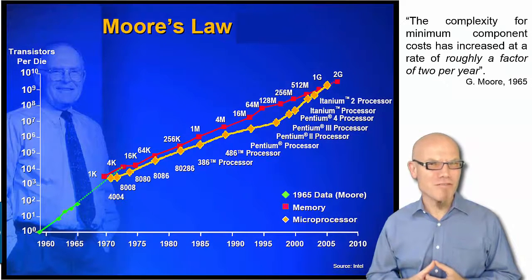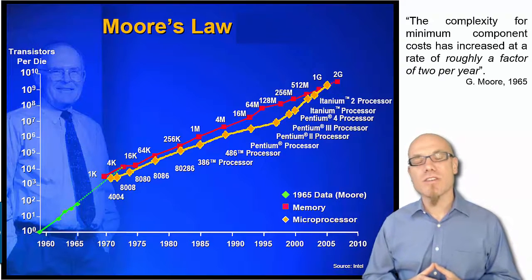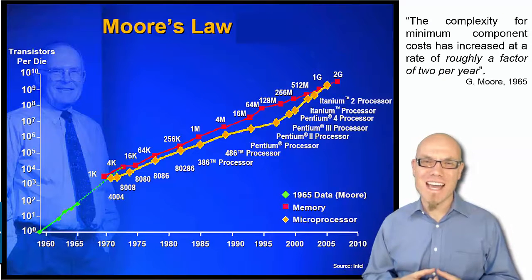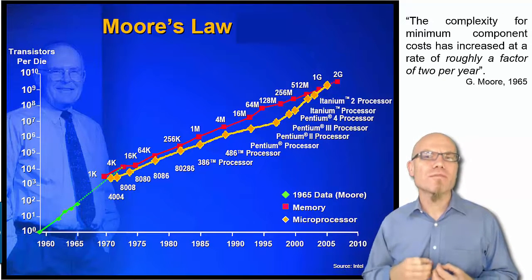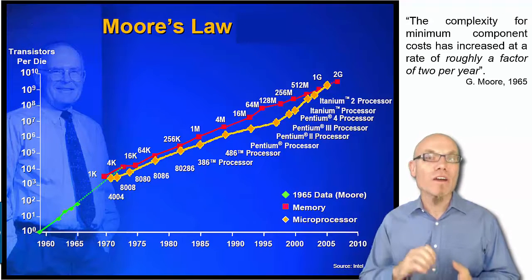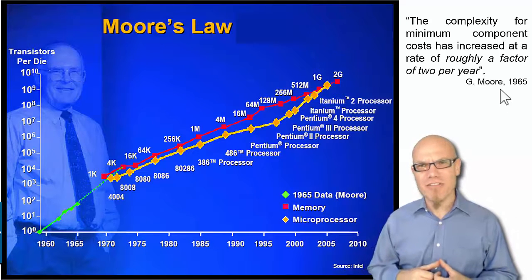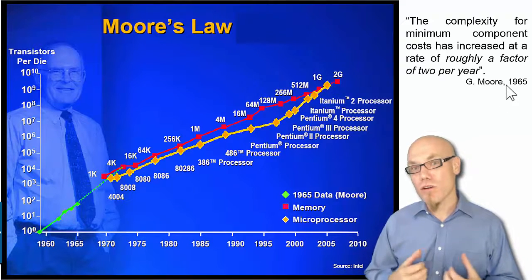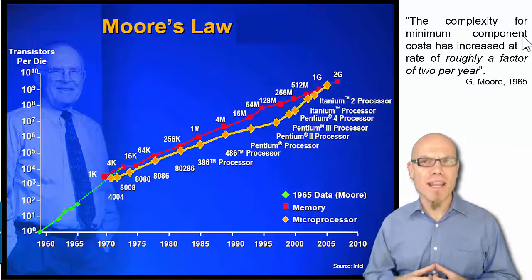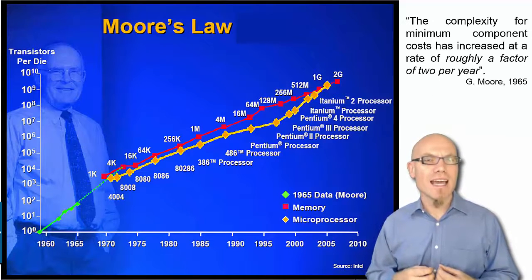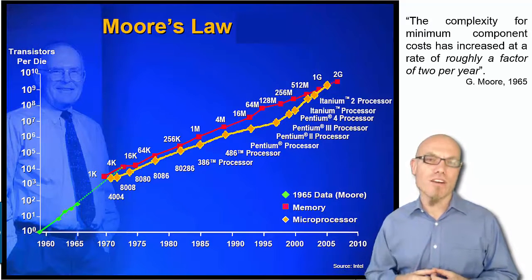The driver of this impressive progress since the 1960s has been Moore's Law. The driver has been that it's possible to pack always more transistors on one microchip, basically by making transistors smaller and smaller. In 1965, Gordon Moore, the co-founder of Intel, said that the complexity for minimum component cost has increased at a rate of roughly a factor of two per year — essentially, every year computational power doubles with regard to its cost.